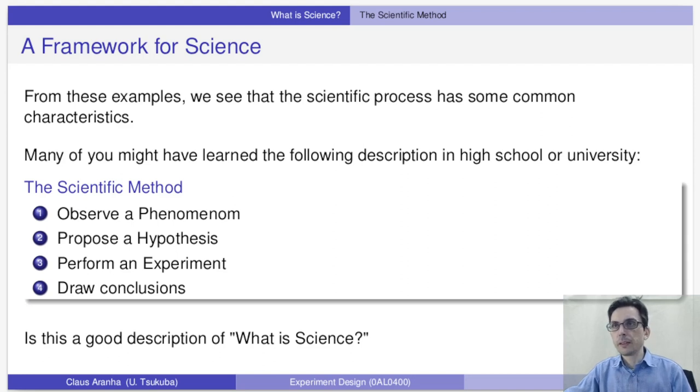So, when we look at these two experiments, these start to show to us a framework about scientific thought. Although these two experiments were very different, they illustrate a common idea of science. The idea that we obtain information through experiments and that this information helps us support or reject hypotheses about how the world works. So, this leads to this description of the scientific method that maybe you saw in high school or college. We observe a phenomenon, and then we propose a hypothesis, then we perform an experiment, and then we draw conclusions.